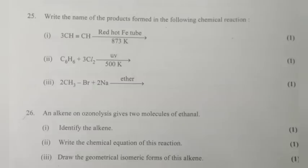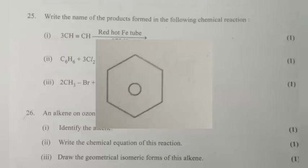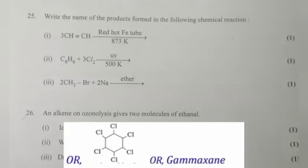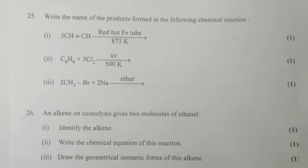Question 25: Write the name of the product formed in the following chemical reactions. Answer: 1. Benzene, C6H6. 2. Benzene hexachloride. 3. Ethane, CH3CH3.